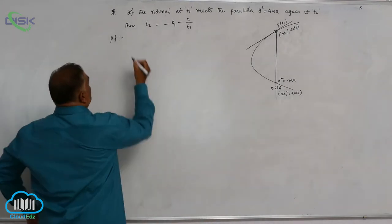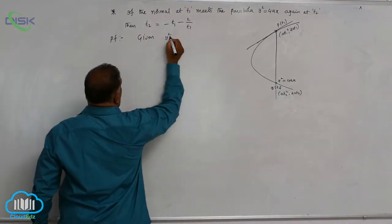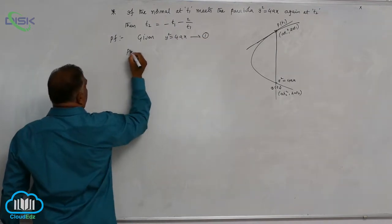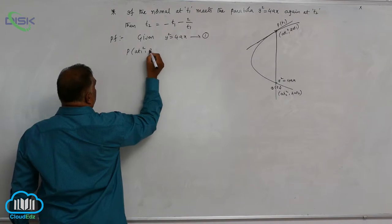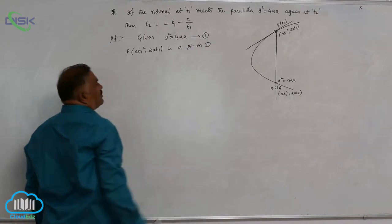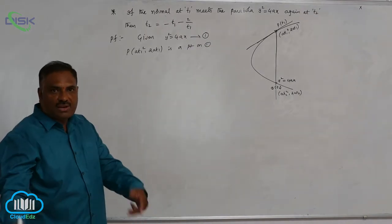Now, the given parabola is y² = 4Ax. Better call it as equation 1. Point P (AT1², 2AT1) is a point on equation 1. Now, we know the equation of normal.